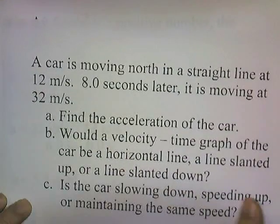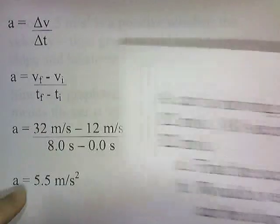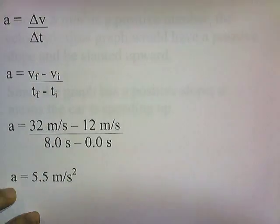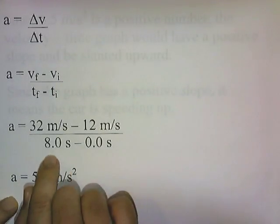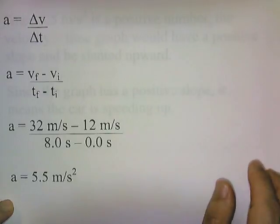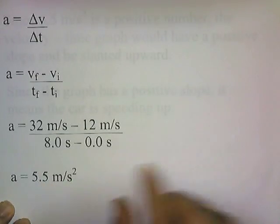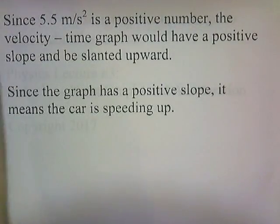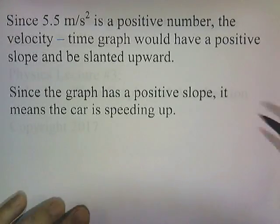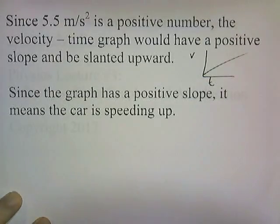The final velocity is 32 meters per second and the initial velocity is 12 meters per second. They don't give us a final or initial time, just the total elapsed time, so we assume initial time is zero and final time is 8 seconds. So 32 minus 12 divided by 8 gives 2.5 meters per second squared — that's the acceleration. Each second, the velocity increases by 2.5 meters per second. Since the acceleration is positive, the velocity-time graph has a positive slope slanted upward, and the car is speeding up.